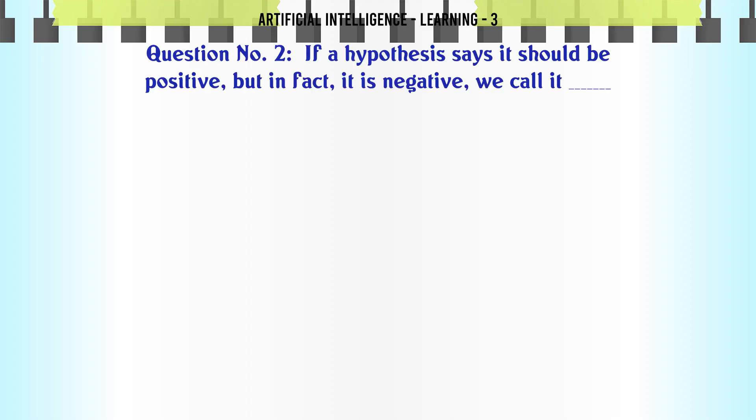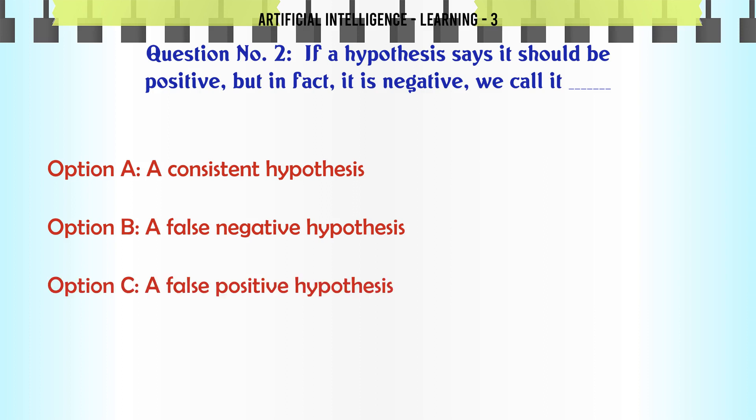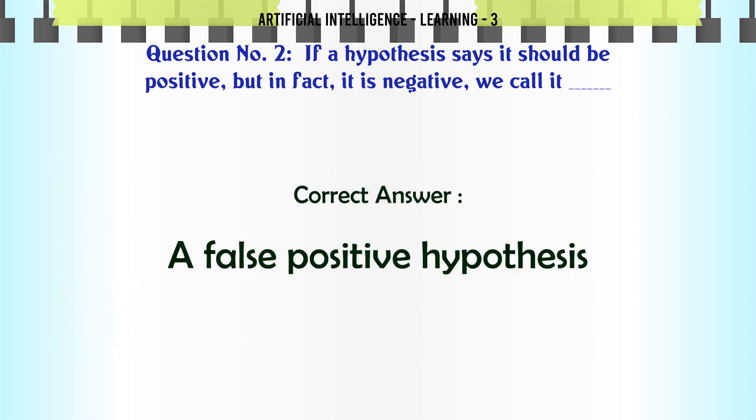If a hypothesis says it should be positive but in fact it is negative, we call it: Option A: a consistent hypothesis. Option B: a false negative hypothesis. Option C: a false positive hypothesis. Option D: a specialized hypothesis. The correct answer is a false positive hypothesis.